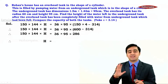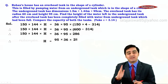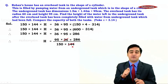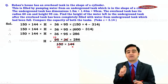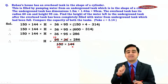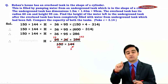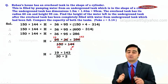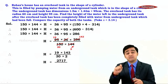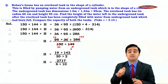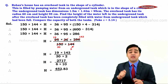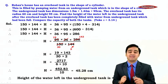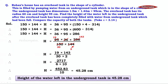To find H, we shift terms to get H = (36 × 95 × 286) / (150 × 144). We cancel 36 and 144 to get 4; cancel 150 and 95 by 5 to get 30 and 19; cancel 4 and 286 by 2 to get 2 and 143. This leaves H = (19 × 143) / (30 × 2) = 2717 / 60. Dividing: 2717 ÷ 6 = 452.83, so 452.83 / 10 = 45.28. Therefore the height of water left in the underground tank is 45.28 cm.